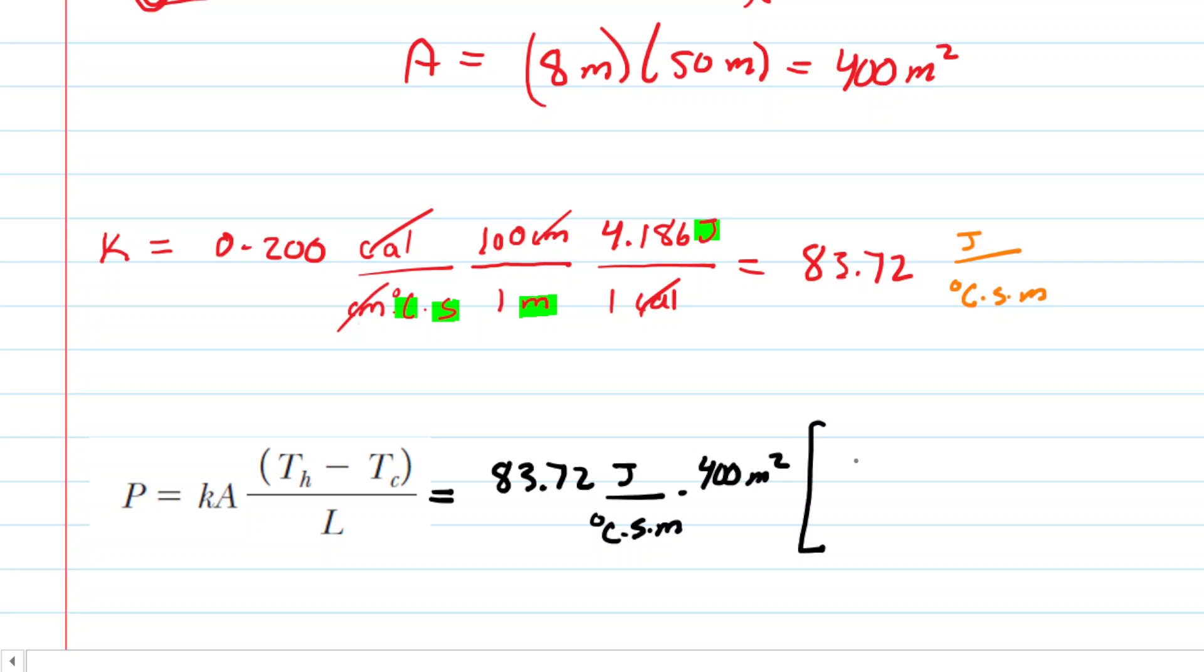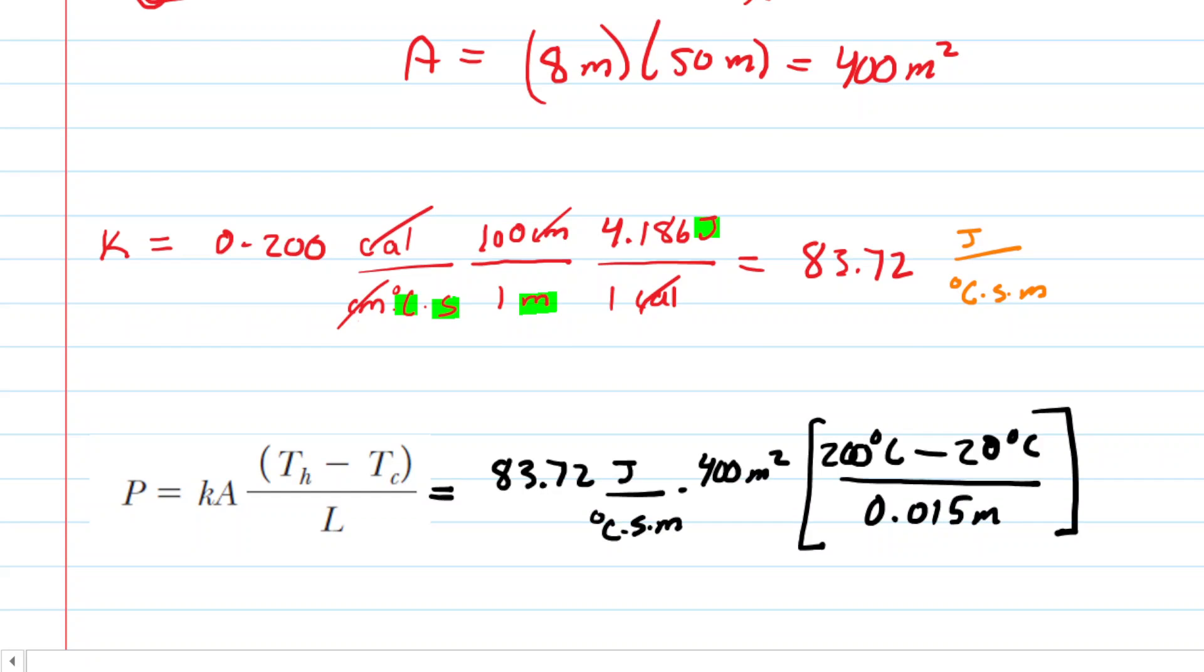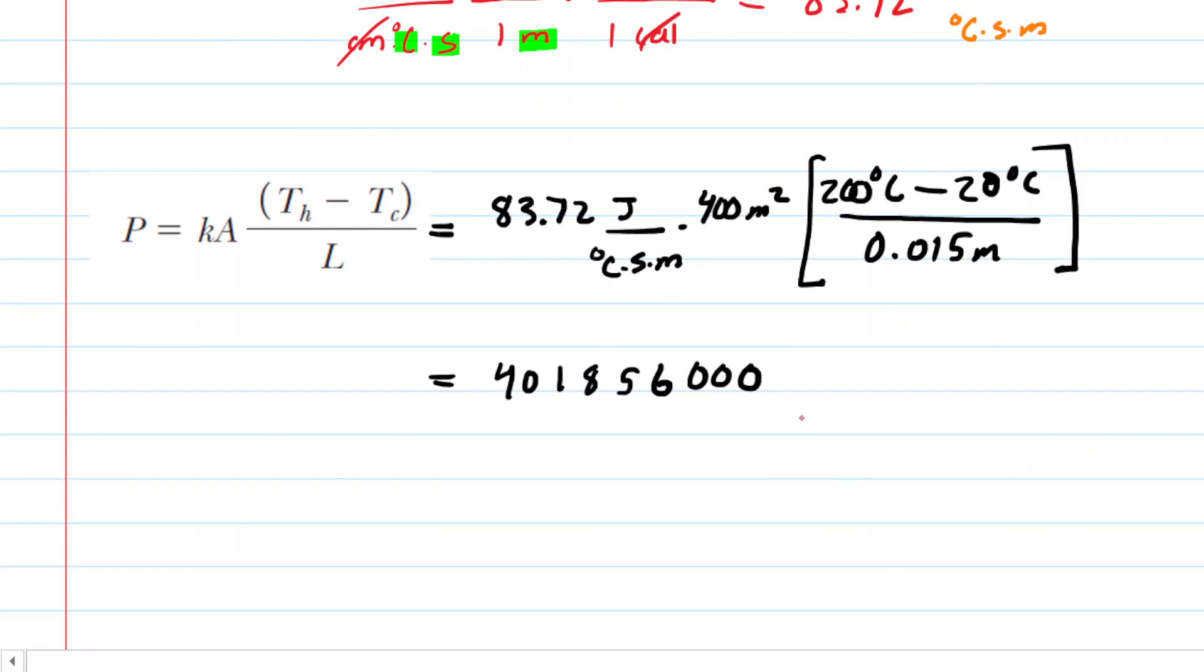Then we have the hot temperature, which was 200 degrees Celsius, minus the cooler surrounding temperature of 20 degrees Celsius, divided by the thickness of that insulation. Remember that was 1.5 centimeters. Divide that by 100 to get it into meters, so you have 0.015 meters. Let's pick up our calculator and punch this in. When you do so, you get this rather large number.